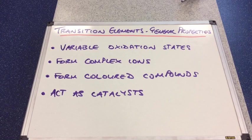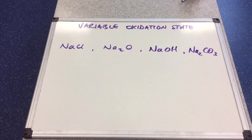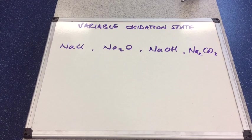In this video we're going to look at the four general properties of the transition elements. We'll start with variable oxidation state.